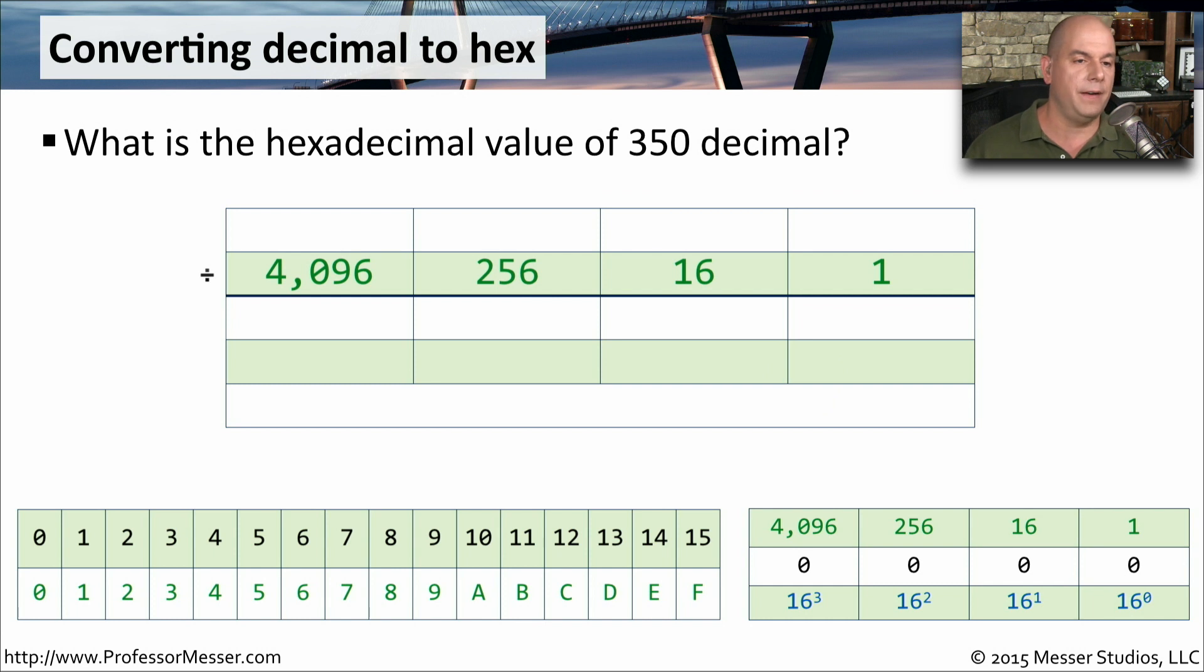Let's do another one. Let's take the value 350 decimal and determine what its hexadecimal equivalent is. Again, we want to put the 350 in the column where 350 is greater than the number in our conversion chart. Starting at the far left, 350 is not greater than 4096, but 350 is greater than 256. Now we'll begin our division. 350 divided by 256 goes one time with a remainder of 94. 94 divided by 16 is 5, with a remainder of 14, and 14 divided by 1 is 14.